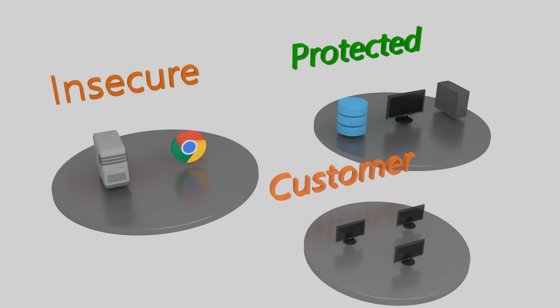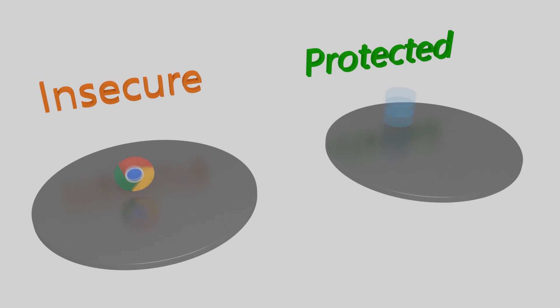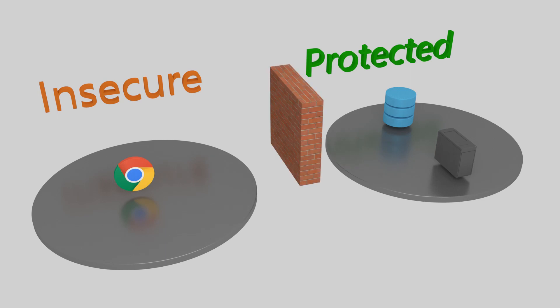Let's imagine that we have a website that some people on the internet need access to. This is made up of a web server and a database, which contains sensitive information. Clearly, our primary goal here is to protect this sensitive data. So one thing that we will do is add a firewall between the internet and our protected network. Can you see the risk with this topology? When we expose the web server to the internet like this,